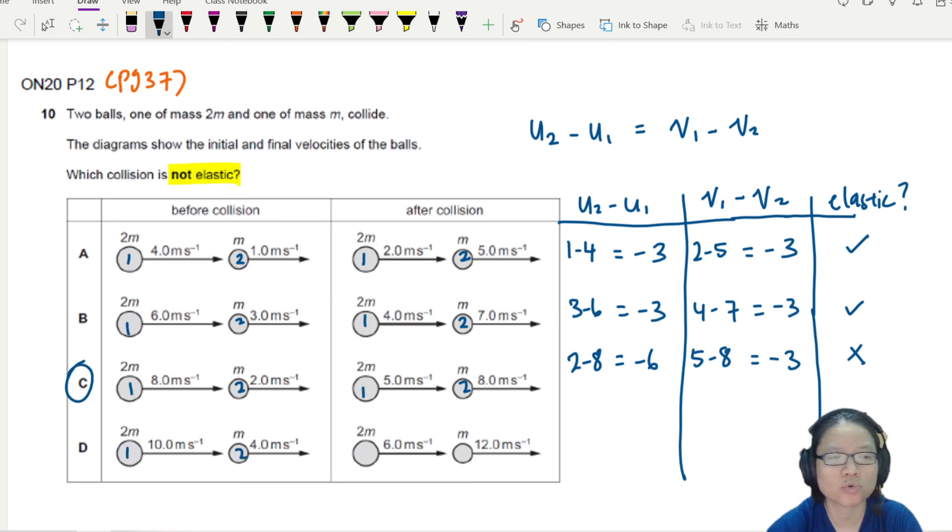This is one, this is two. I'll take 4 minus 10 which is negative 6. This is 1, this is 2. I will take 6 minus 12 which is negative 6. So elastic.